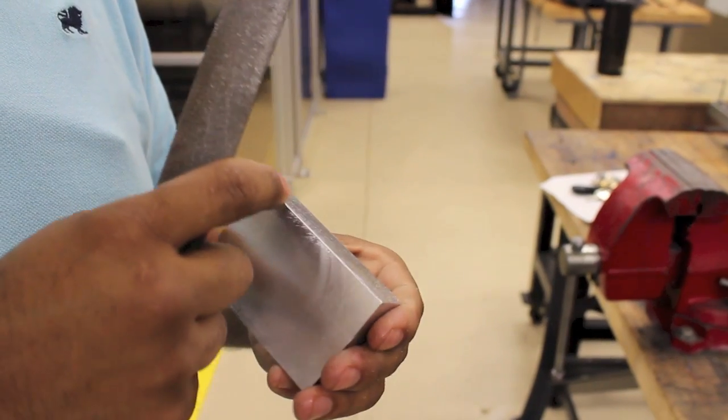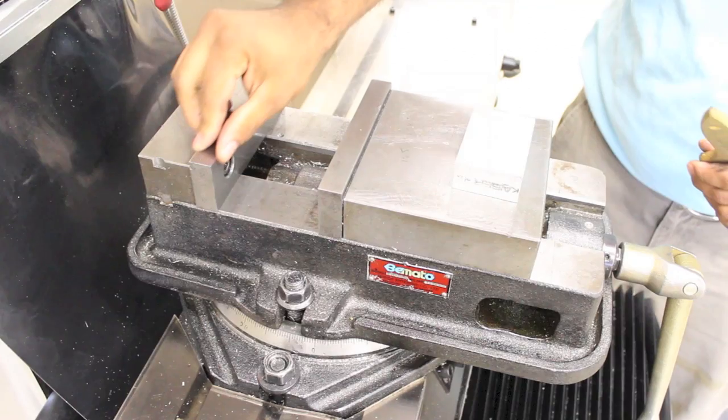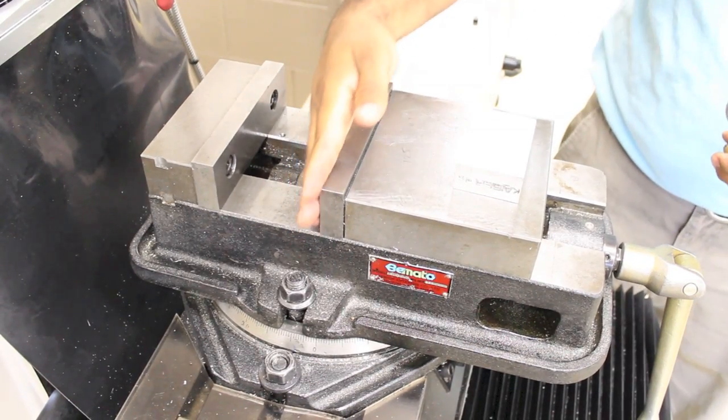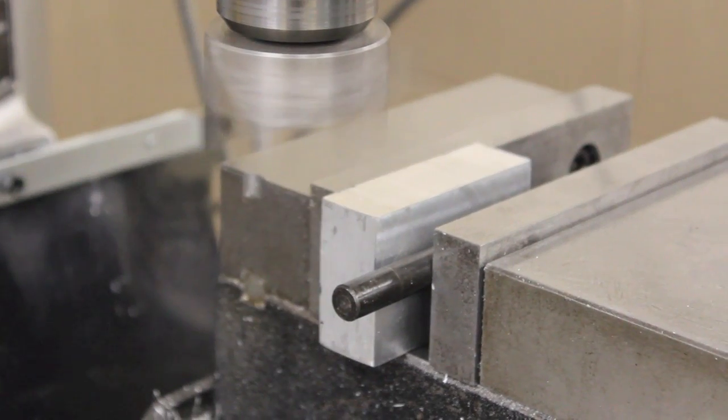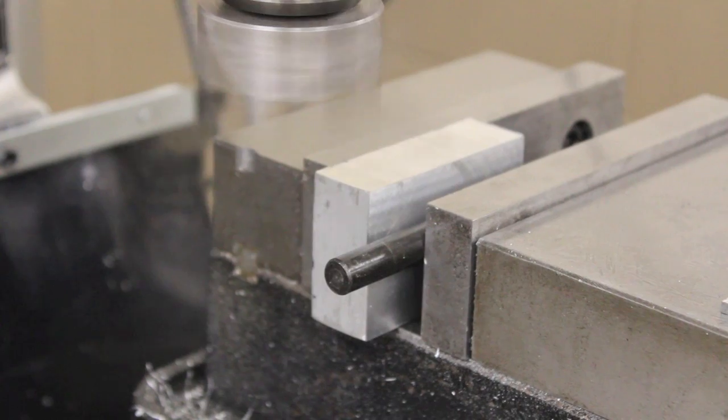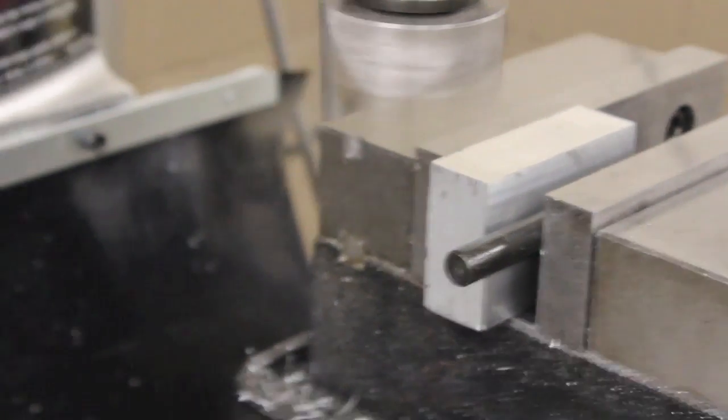Remove the block from the vise and proceed to deburr the edges of the part that now have burrs. Be sure to remove all burrs and clean the block. The vise must also be cleaned, as well as the parallels if they were used.